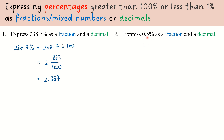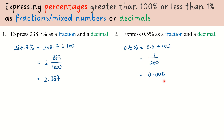Similarly, looking at the percentage 0.5%, to convert it into a fraction or a decimal, I take 0.5 and divide by 100. Using the calculator, that gives us the fraction 1 over 200, which also equals 0.005. So whenever we are given a percentage, regardless of the value, we always divide by 100 to convert it into a fraction or decimal.